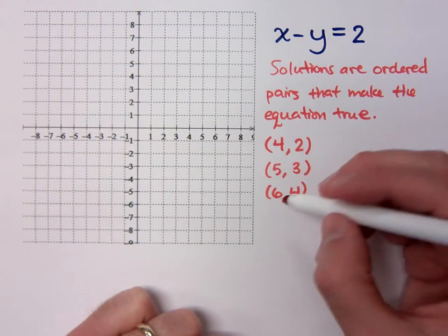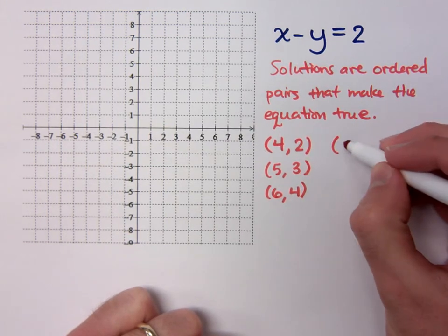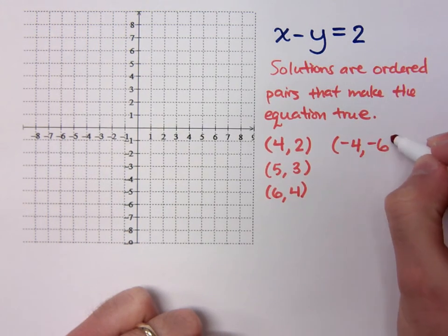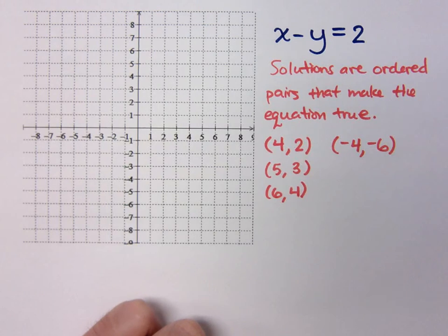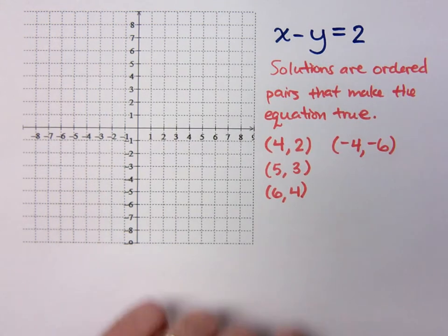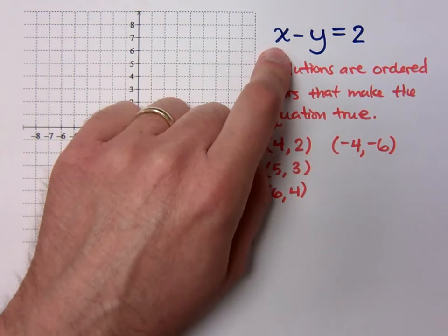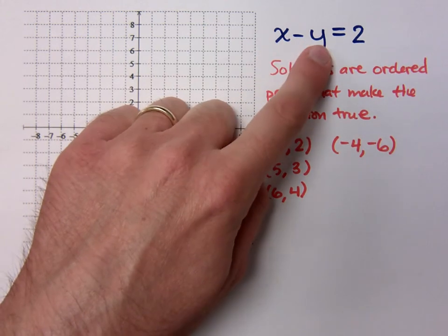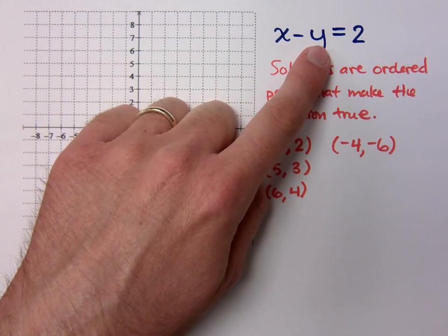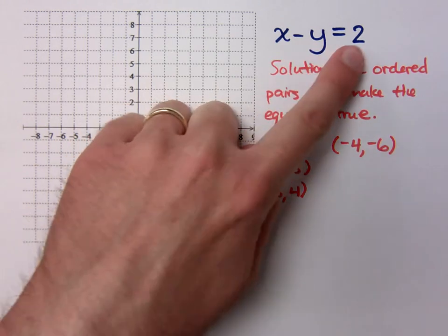I mean, I could even do something like negative 4 and negative 6. If I plug in negative 4 here minus the negative 6, wouldn't that make that negative 4 plus 6? And that would equal 2.